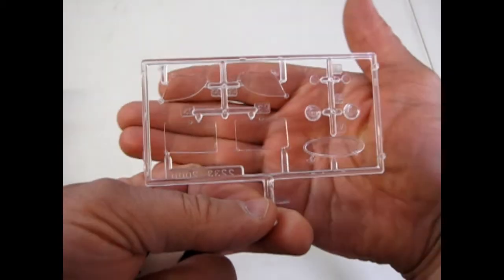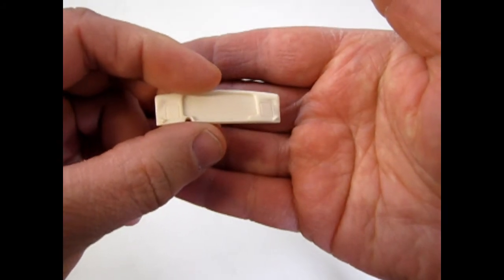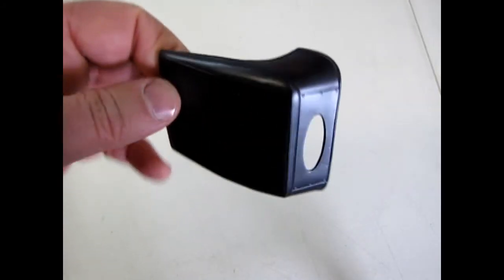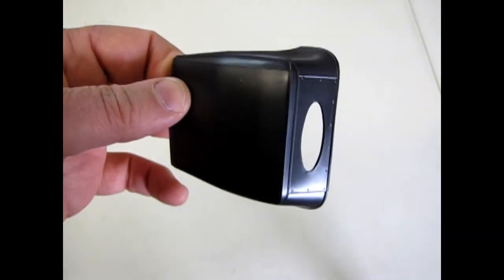And there's our clear parts. And our dashboard, a separate chrome insert. Chrome was quite a luxuriant thing back in those days. And here is the convertible top in the up position, and it has the little buttons on there as the real car does.